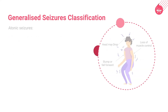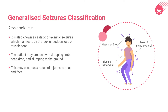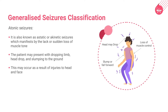Atonic seizures, also known as astatic or akinetic seizures, occur as a result of loss of muscle tone. They usually occur due to head injuries, and the clinical presentation includes dropping limbs, head drop, and slumping to the ground.